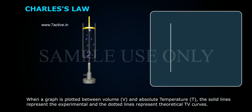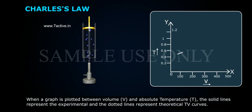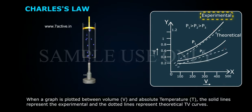When a graph is plotted between volume V and absolute temperature T, the solid lines represent the experimental and the dotted lines represent theoretical V-T curves.